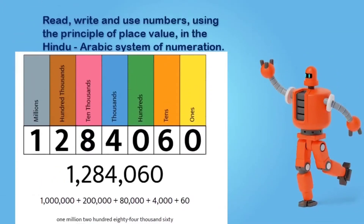Take a look at the place value chart here. It goes all the way up to the millions. It also gives you a taste of expanded notation, where you can see how many millions you have, what the value of the 8 is, what the value of the 6 is. When it comes to the 1s, because there are 0 ones, you will not see that at all.